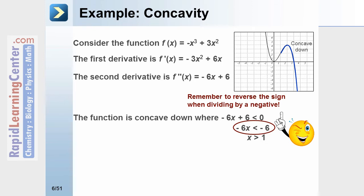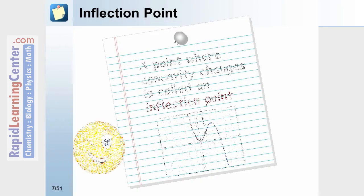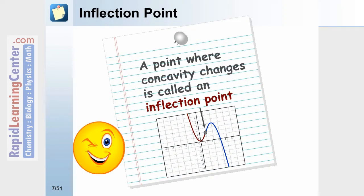The function is considered to be concave up wherever the second derivative is greater than 0. Performing the algebra again on this inequality gives us x less than 1. If we take a look back at the graph, the area in red would be concave up.